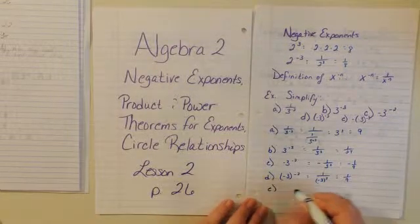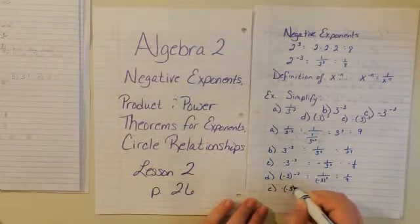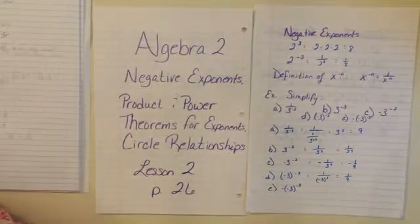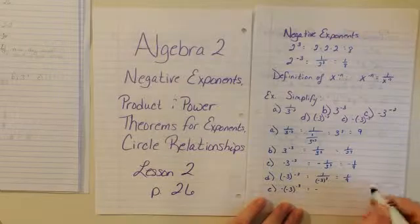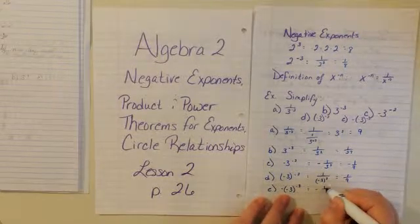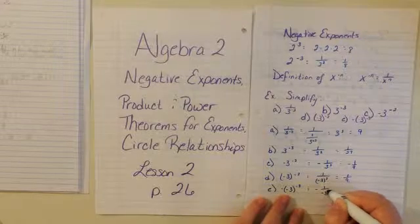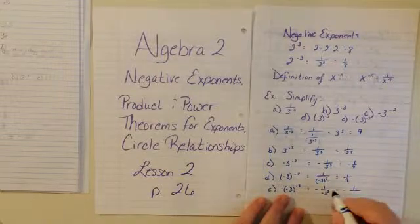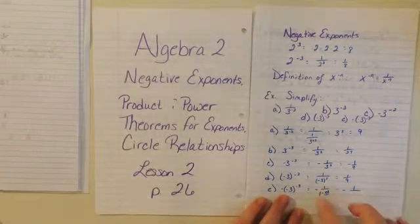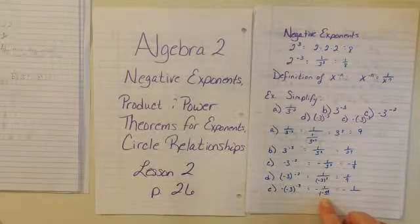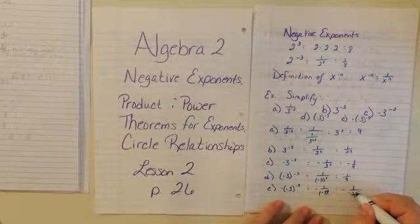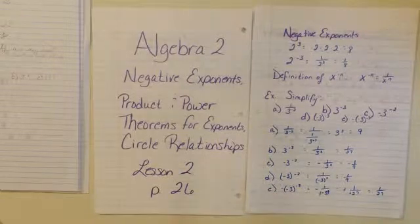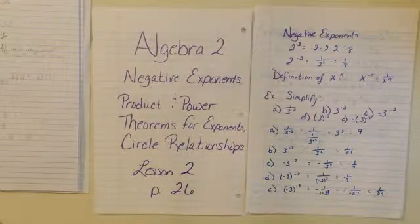And E, we have negative 3 to the negative 3. Leave that negative out in front. We're going to flip the negative 3 underneath and that becomes a positive. So now we have negative over negative 3 cubed. Negative 3 times negative 3 is 9, times negative 3 is negative 27. Now we have a negative and a negative, so they cancel each other out, and we have positive 1 over 27. Watch your negatives.